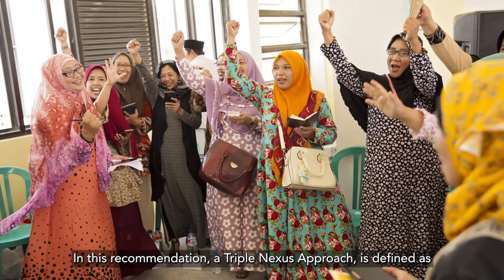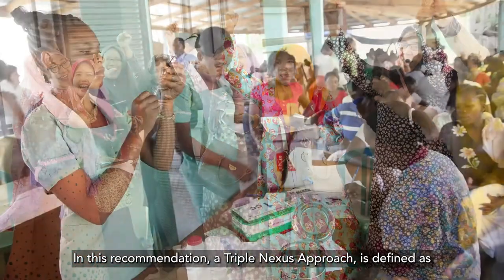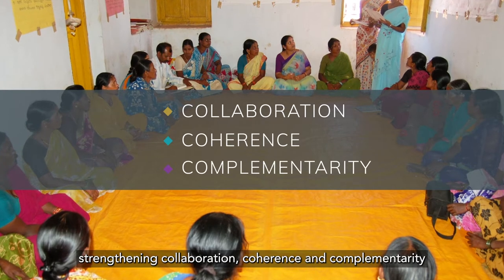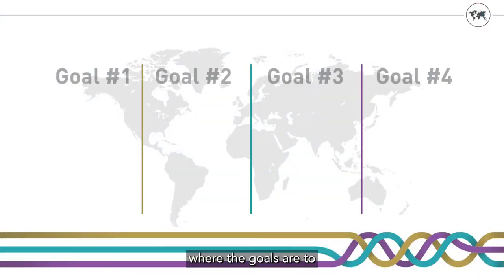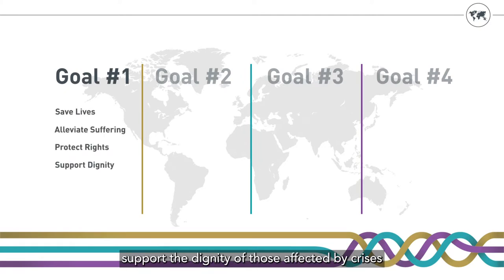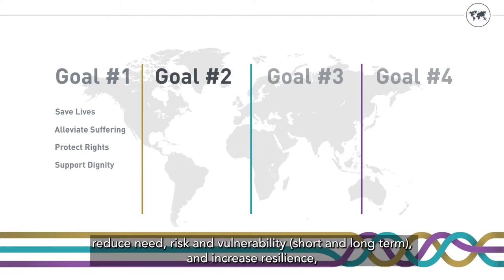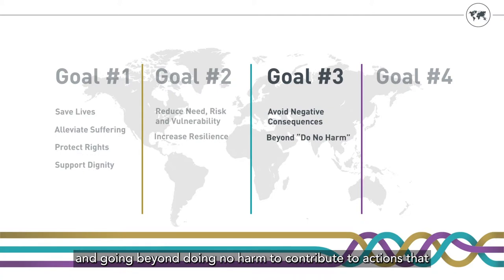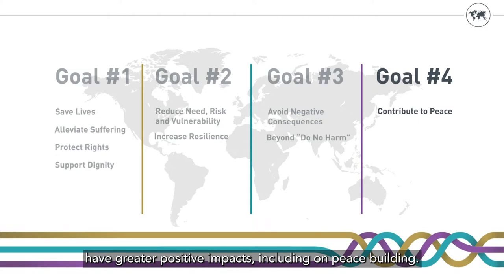In this recommendation, a Triple Nexus approach is defined as strengthening collaboration, coherence and complementarity among these three pillars, where the goals are to save lives, alleviate suffering, protect the rights and support the dignity of those affected by crises, reduce need, risk and vulnerability short and long term, and increase resilience. Avoid negative consequences on conflict dynamics and going beyond doing no harm, to contribute to actions that have greater positive impact, including on peacebuilding.